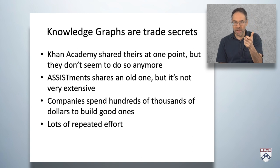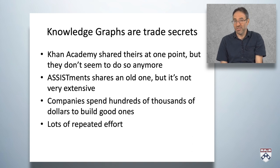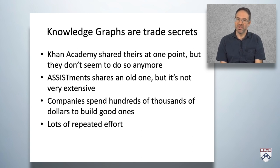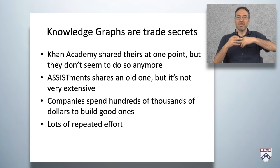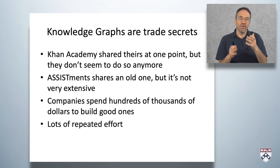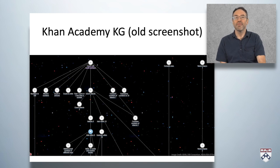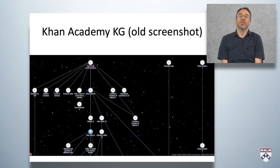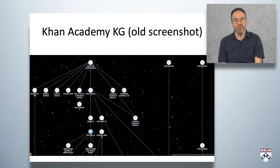Importantly and dismayingly, knowledge graphs today are trade secrets. Khan Academy shared theirs at one point, but as far as I can tell, they don't seem to do so anymore. Assistments shares an old one, but it's not very extensive. Companies spend hundreds of thousands of dollars to build good ones, and they build them over and over — many different companies around the planet have built Algebra 1 and middle school math knowledge graphs. So there's lots of repeated effort and wasted money. Here's an old screenshot of the Khan Academy knowledge graph — you can see there's a lot of stuff, and this is just a very small portion of a very big graph.